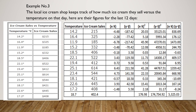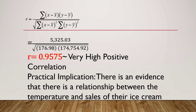You can pause the video and try to compare if your answer matches what is shown. Computing for r, the correlation coefficient: we have 5,325.03 divided by the square root of 176.98 times 174,754.92. Our r equals 0.9575, which is a very high positive correlation.